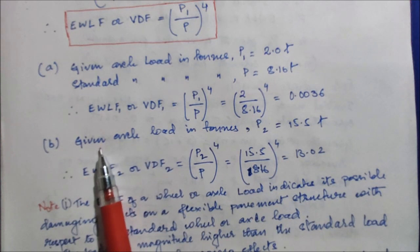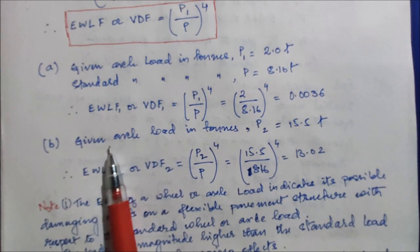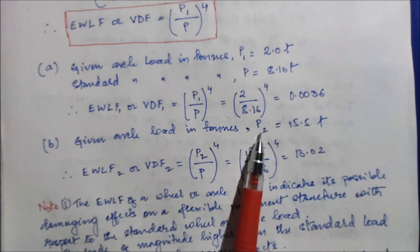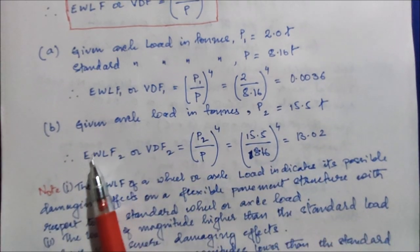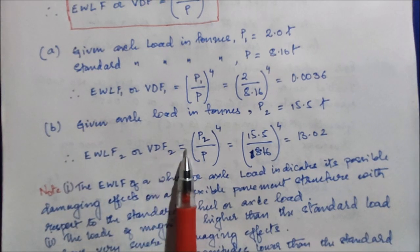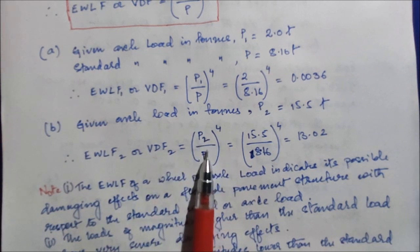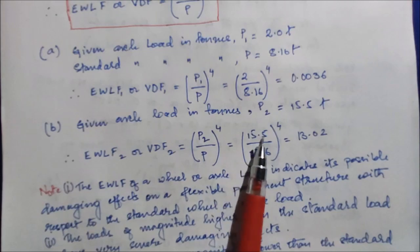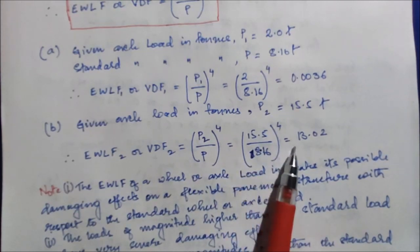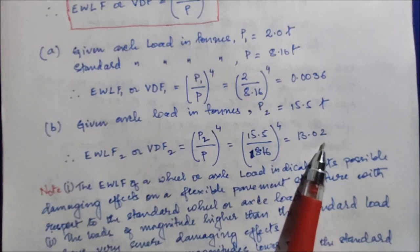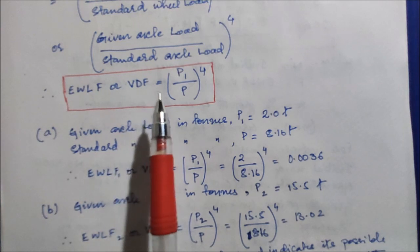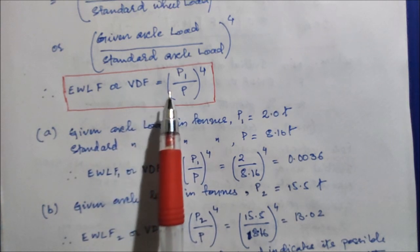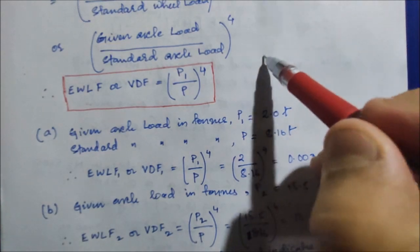For Class B — heavy commercial vehicles — the given axle load P2 is 15.5 tons. Therefore, EWLF2 or VDF2 = (P2 / P)^4 = (15.5 / 8.16)^4, which equals 13.02.